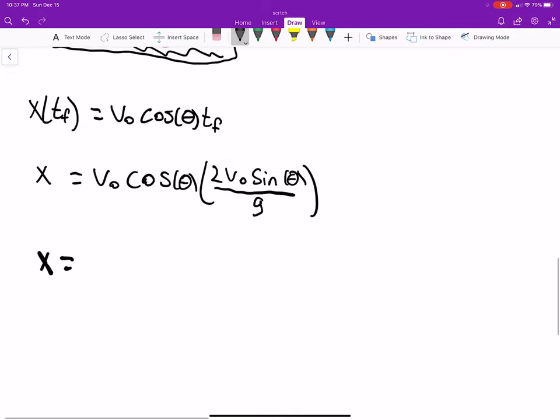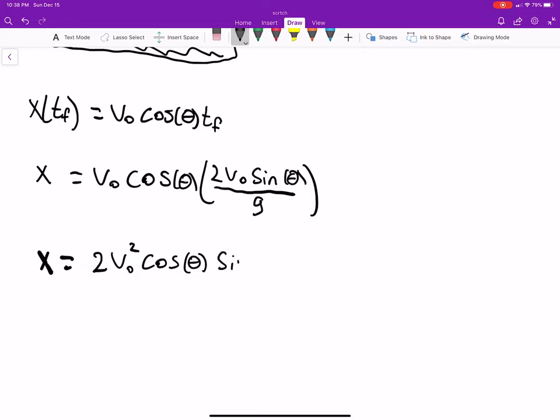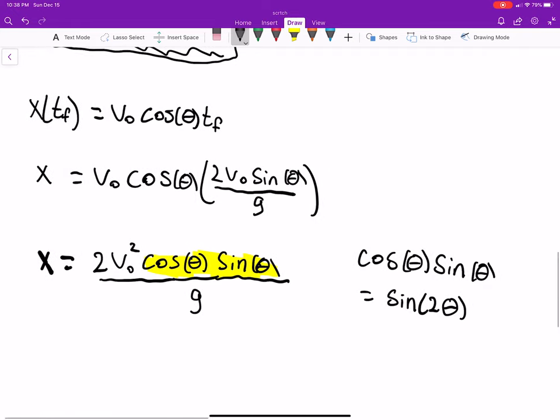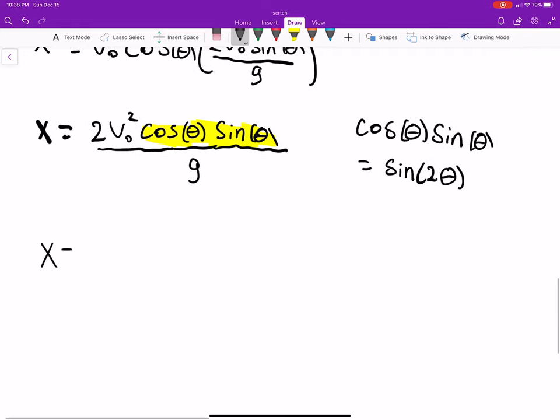Or x equals two v naught squared times cosine of theta times sine of theta divided all by g. And this is a trig identity right here - cosine of theta times sine of theta is equal to sine two theta. Hopefully you guys remember that from trig. If not, there you go. So simplifying that, we can say x equals two v naught squared times sine of two theta divided all by g.